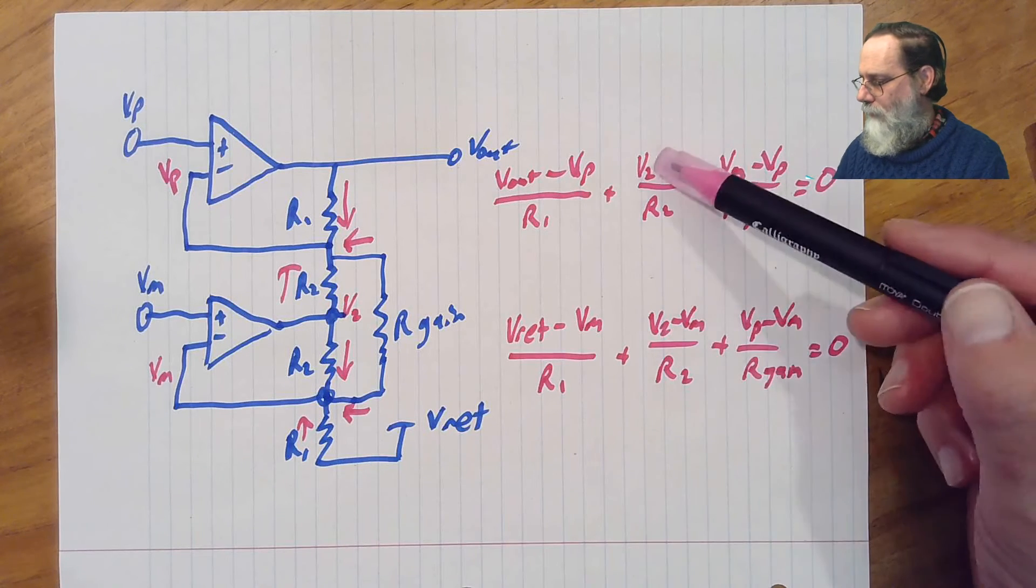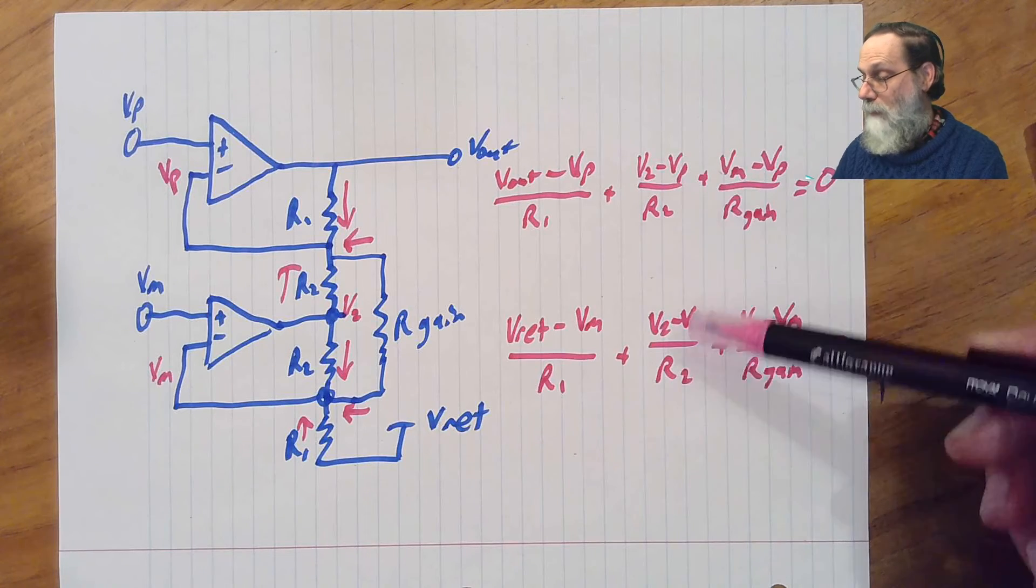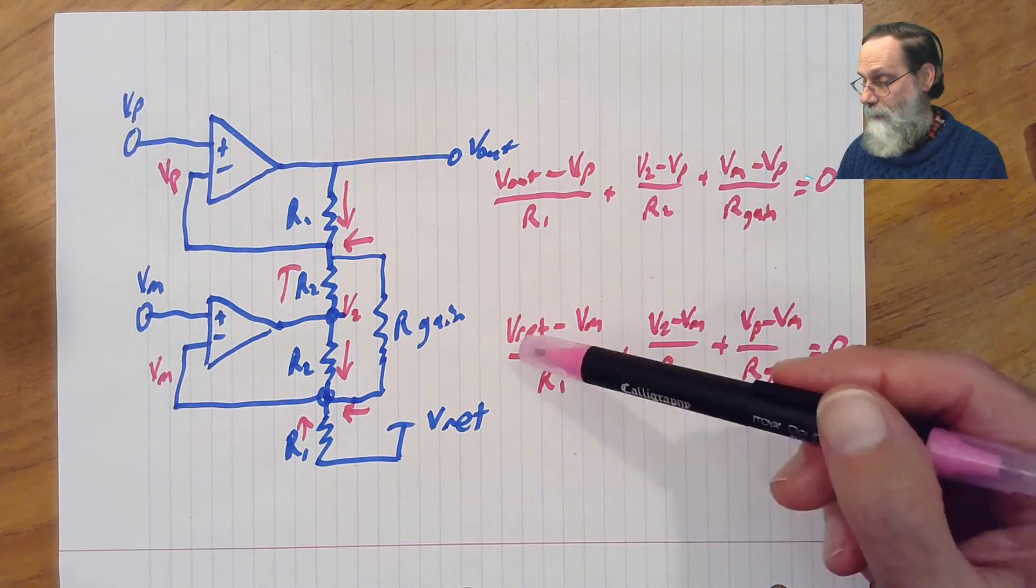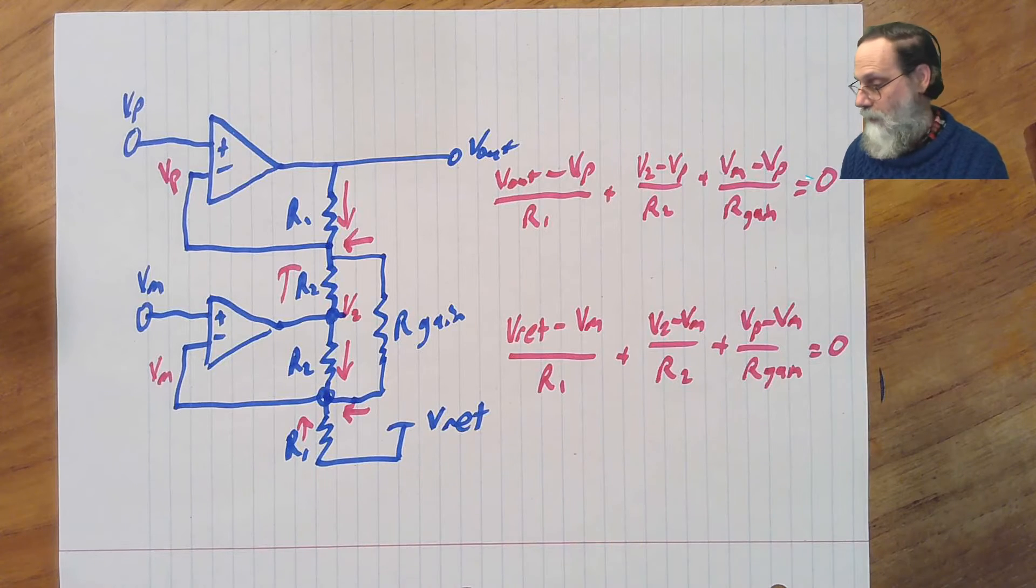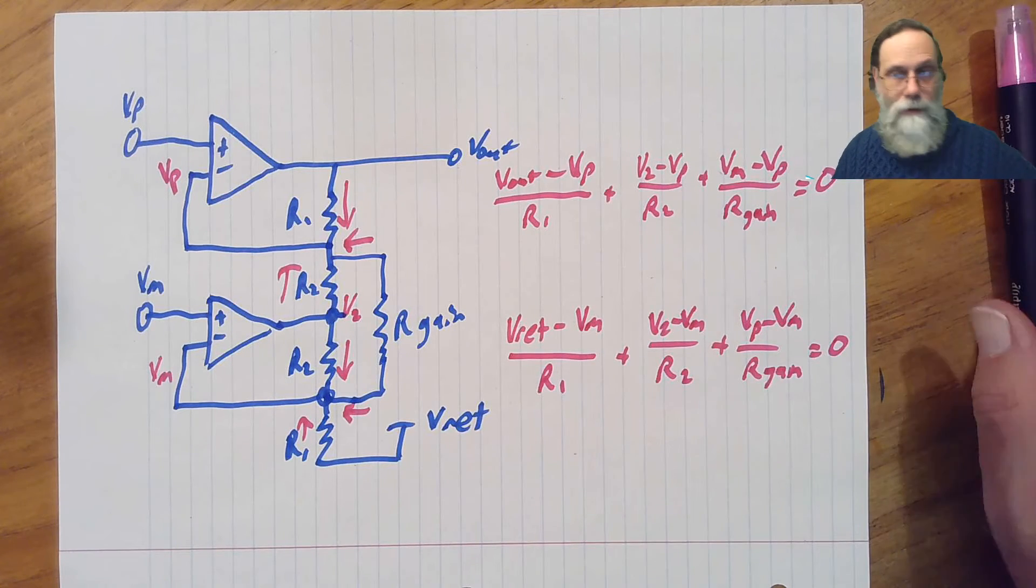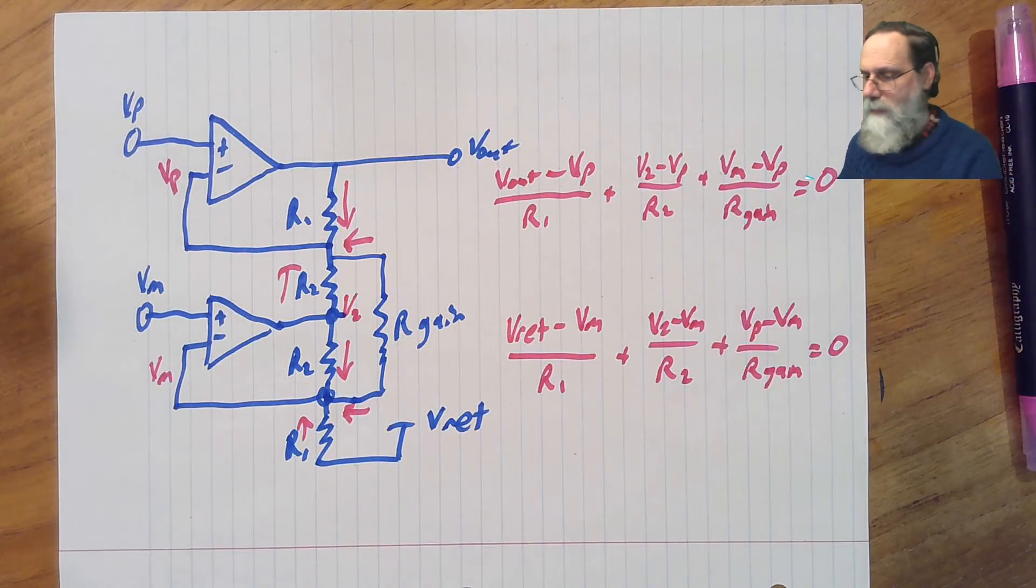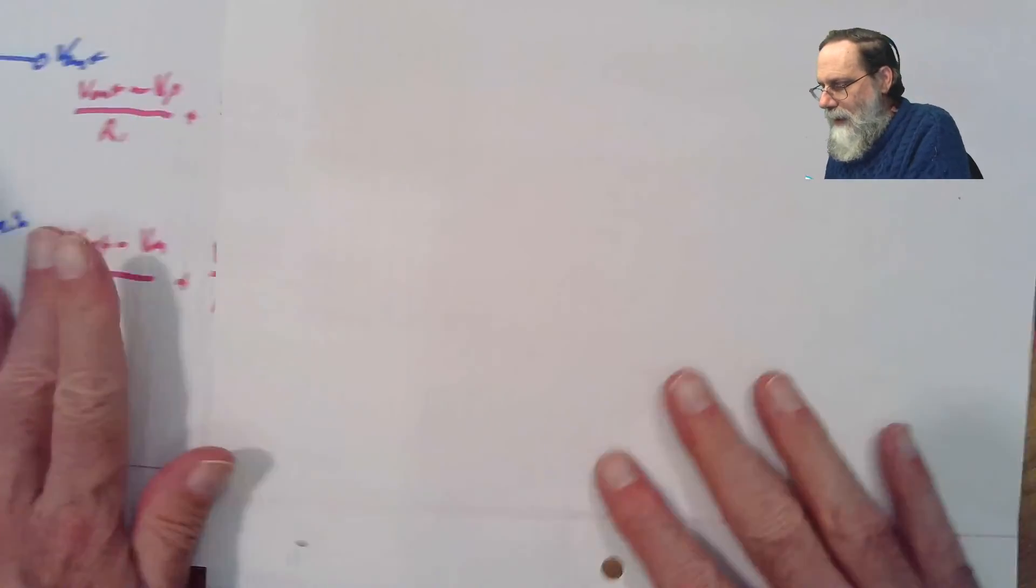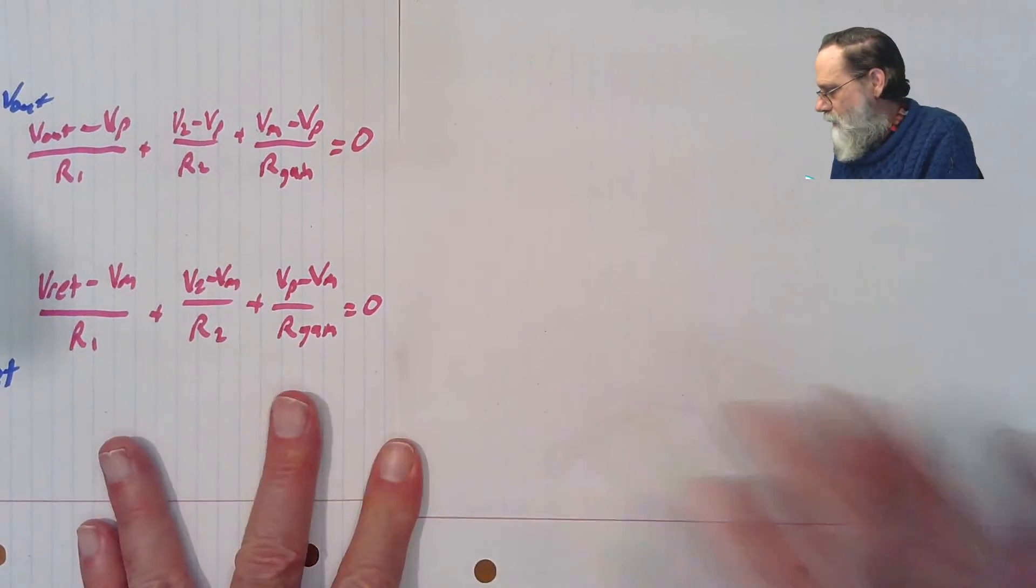So if we wanted to get rid of v2 here, we could just subtract the bottom equation from the top one, and then we'd end up with a vout minus vref, which looks promising. So, let's just do that subtraction, slide that over, start a new sheet of paper.